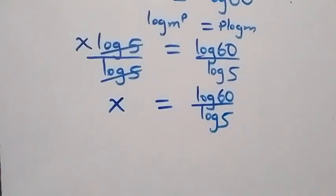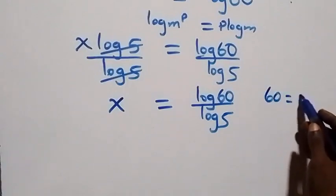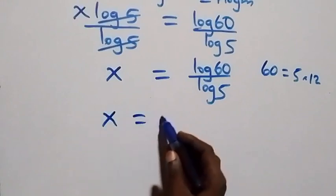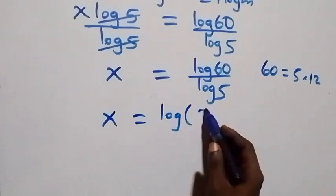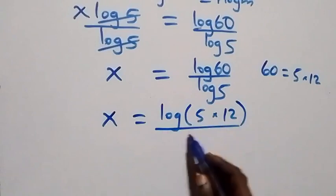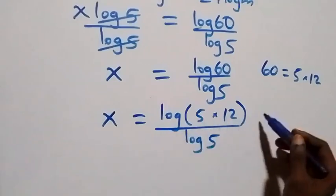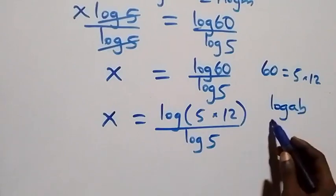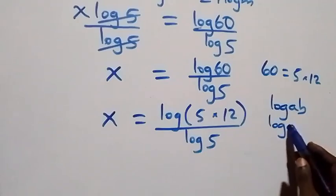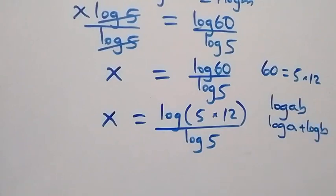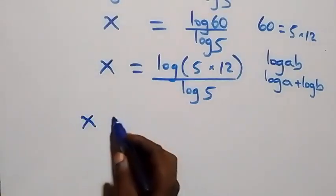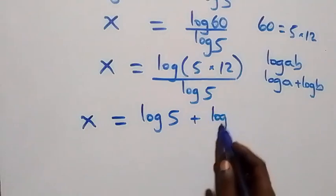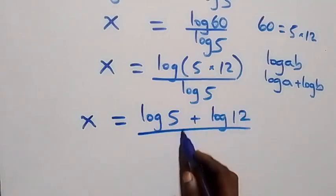We can express 60 as 5 times 12, so x equals log(5×12) over log5. This follows the product rule of logarithms: log(a·b) equals log(a) plus log(b), giving x equals (log5 + log12) over log5.